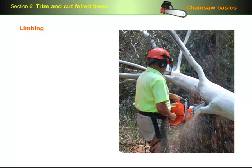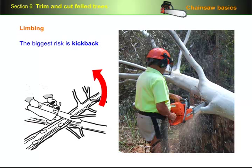Limbing is the process of removing the branches from a tree. The biggest risk here is kickback, because there'll often be times when the nose comes close to other branches that you're not watching. Always stay mindful of where the nose is, especially when you can't actually see it.